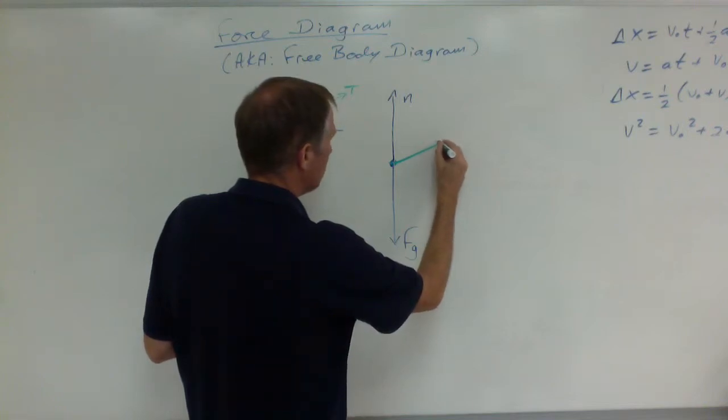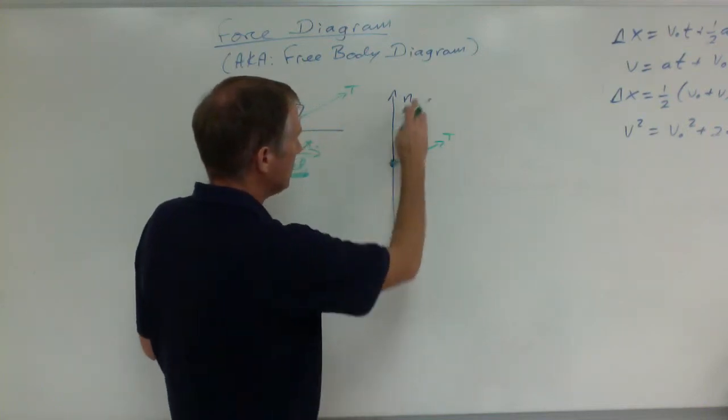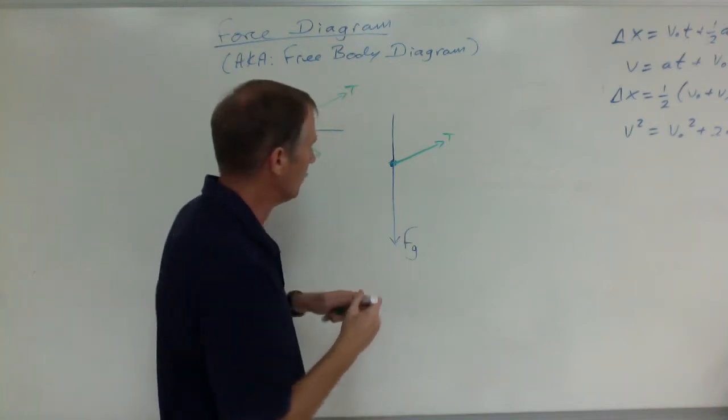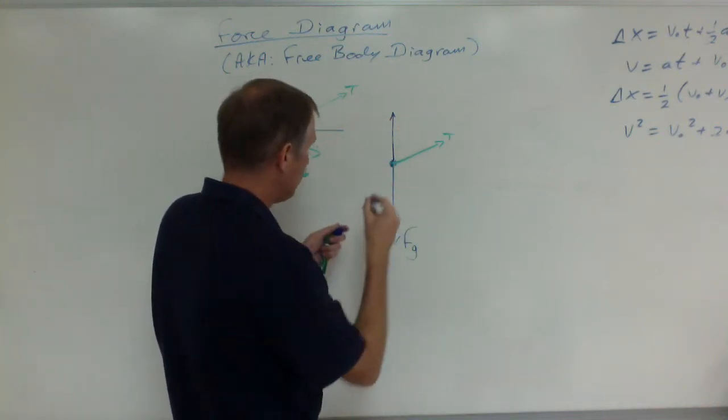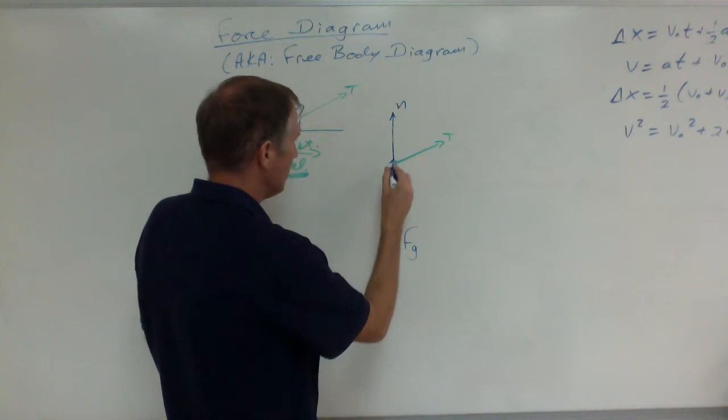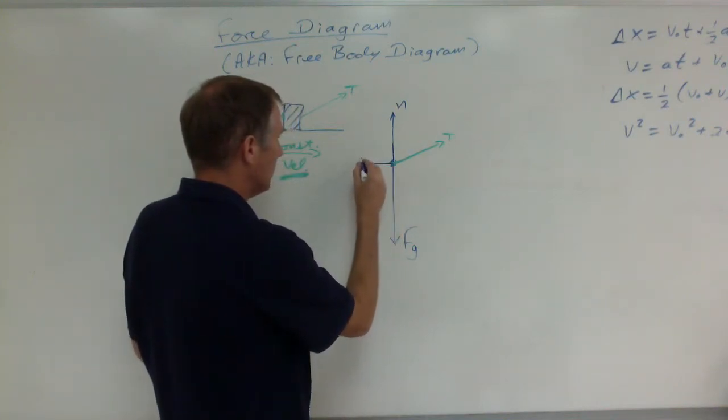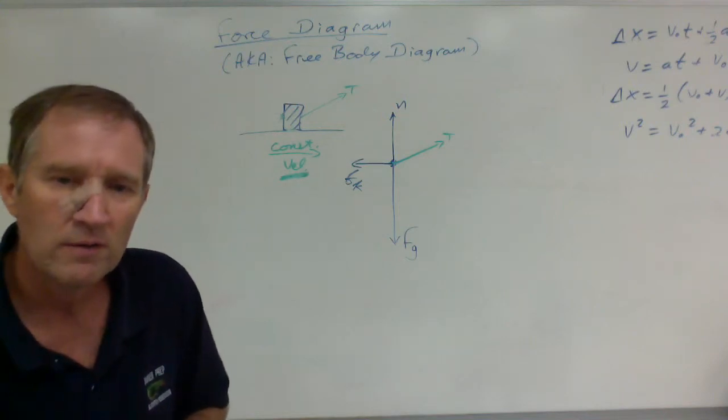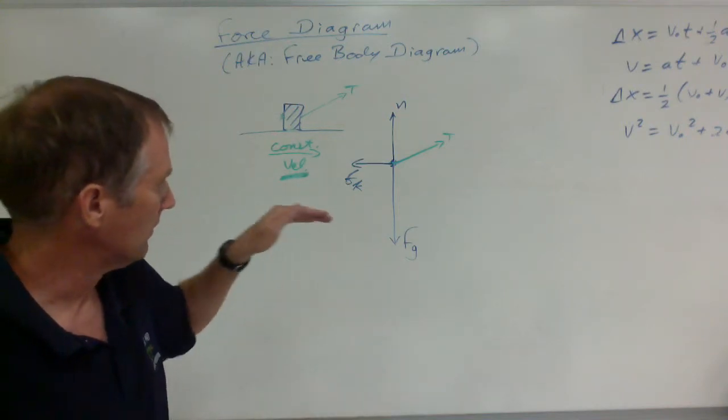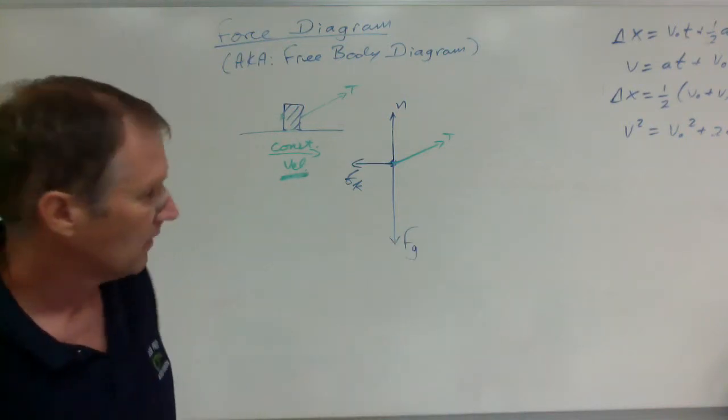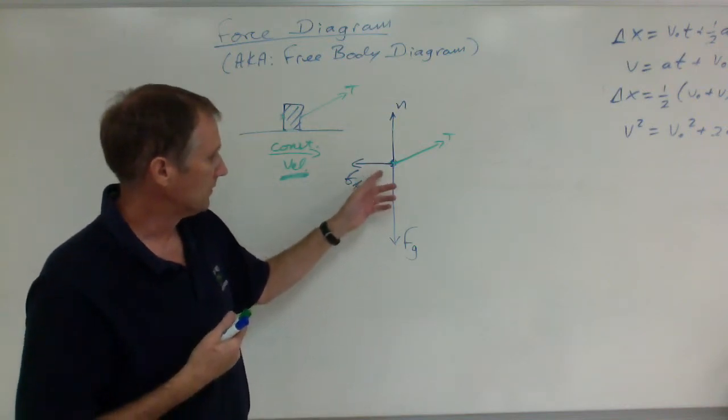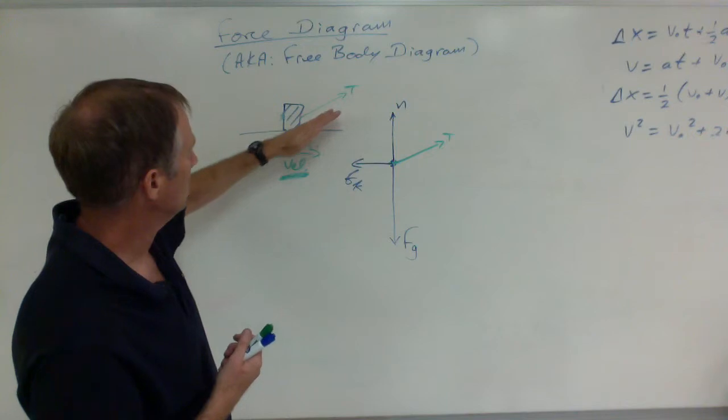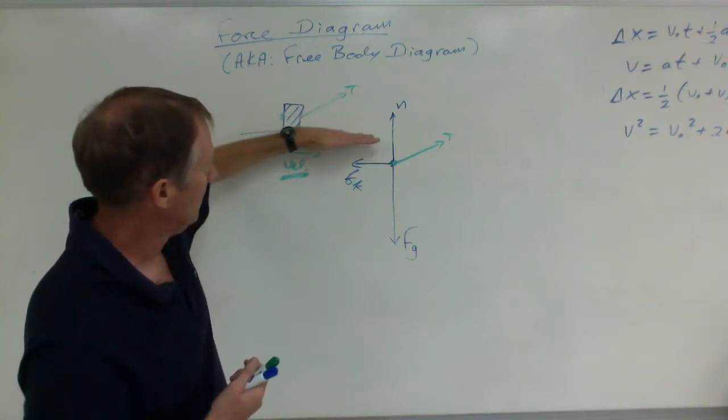My force diagram, there's the tension. Something we'll learn later is that the normal force would drop. Don't worry about that, but it would drop down. And we still have kinetic friction. Friction is always in the opposite direction of the direction the thing is sliding. I'm pulling this thing up at an angle with the tension, but it's sliding horizontally.